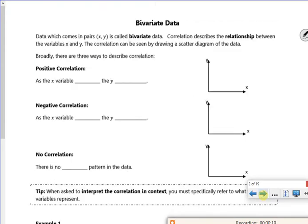So bivariate data. Bivariate just means two. Variate is variables. It's pretty much a scatter graph to be honest. So it's got a scatter diagram there. So for positive correlation, we know that they both increase. So x increases and y increases.